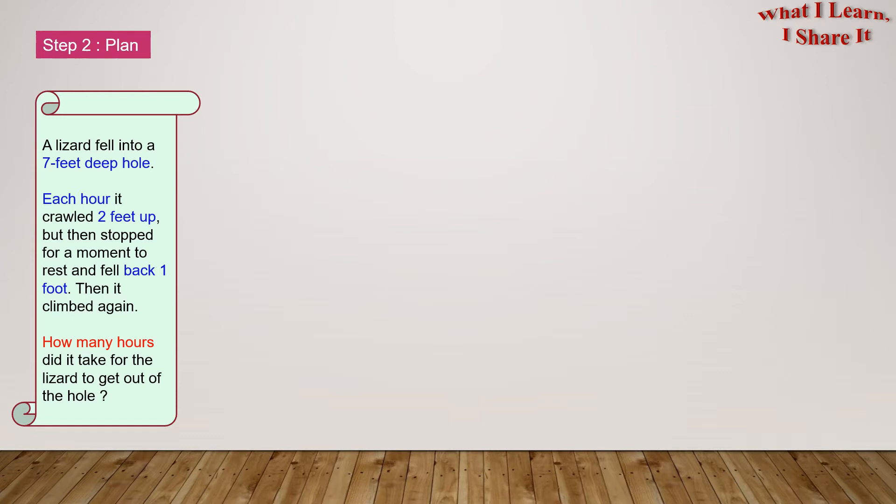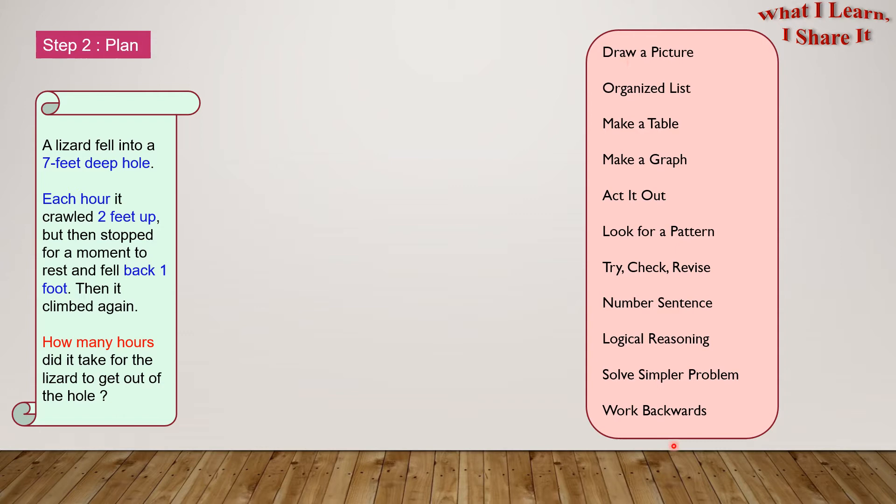Step 2. Plan. So now let's think about the strategies. So here are all the strategies. There's Draw a Picture, Organize List, Make a Table, Make a Graph, Act It Out, Look for a Pattern, Try Check Revise, Number Sentence, Logical Reasoning, Solve a Simpler Problem, and Work Backwards. I'm going to use Draw a Picture, and Make a Table.